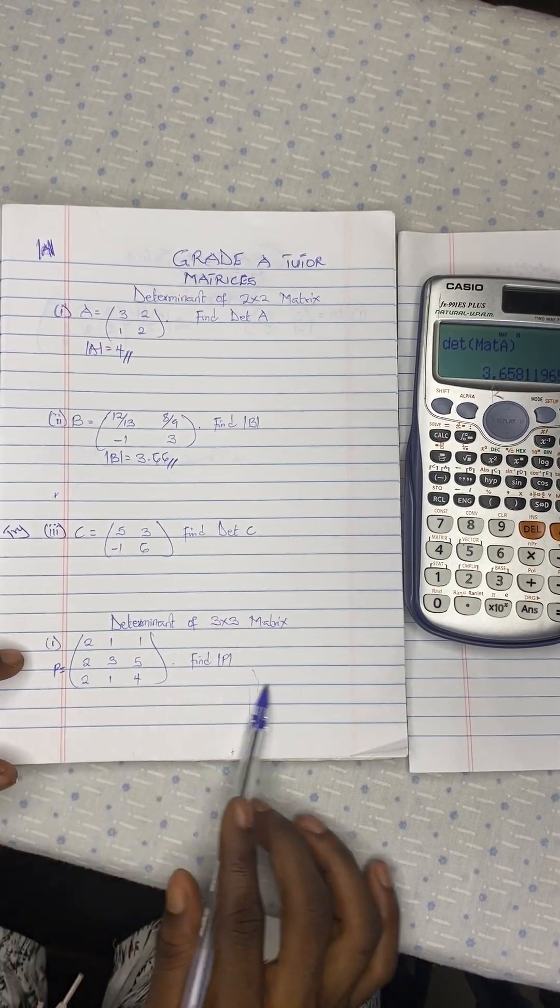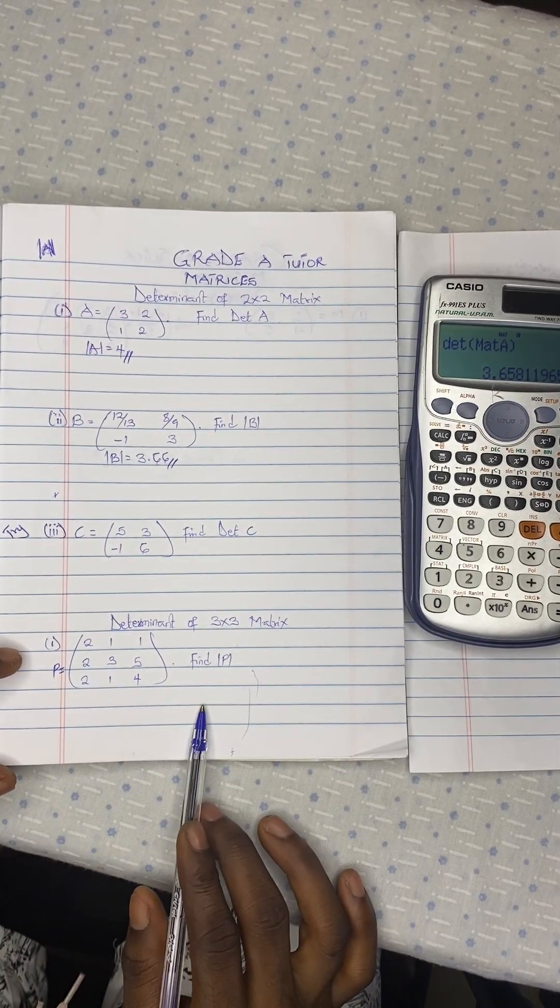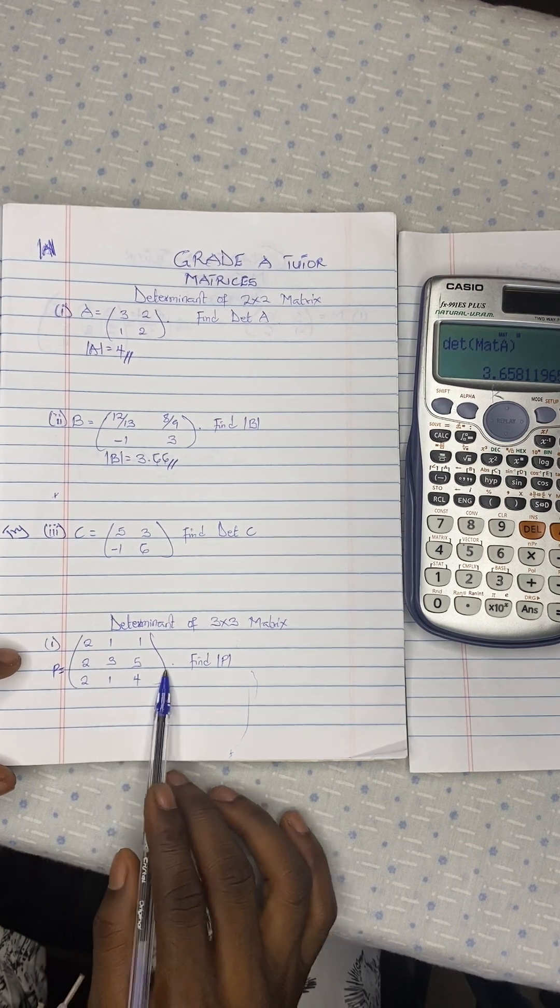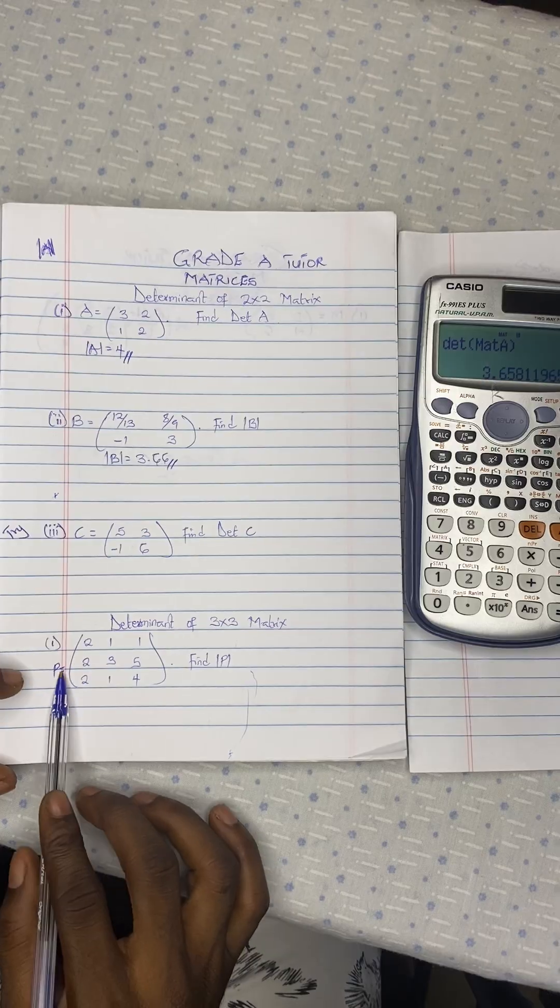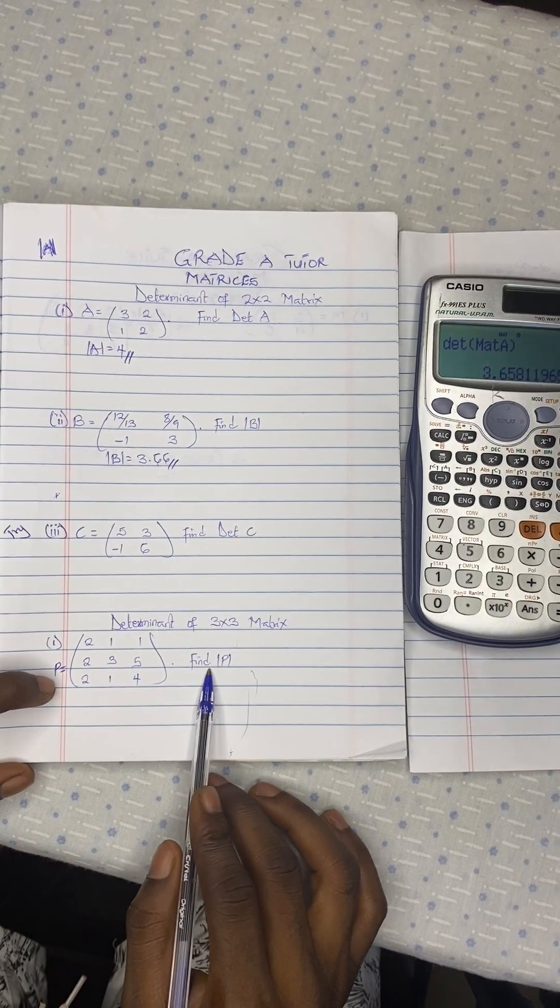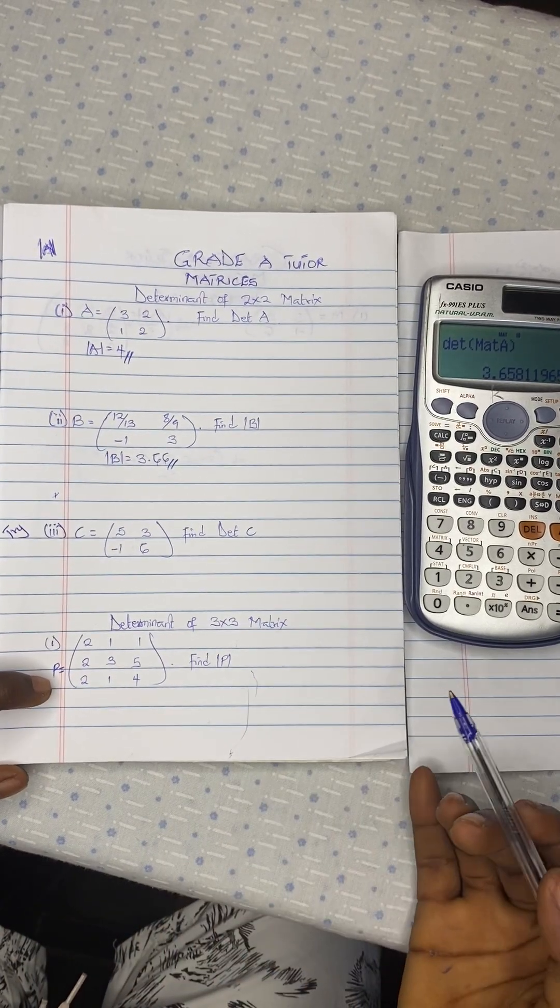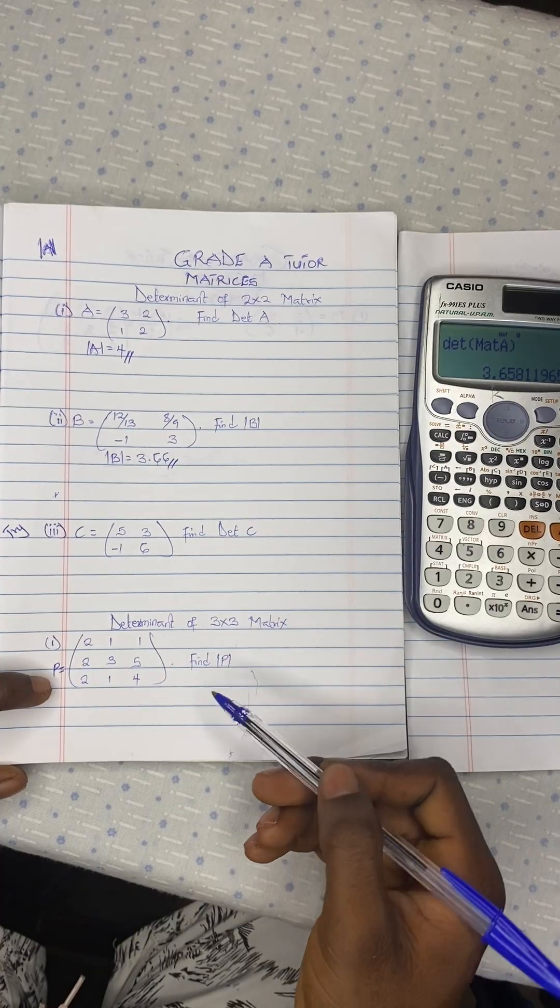So there is a question we have here. 2, 1, 1, 2, 3, 5, 2, 1, 4. And it is being represented by the letter P. So we should find the magnitude or the length or the determinant of P.